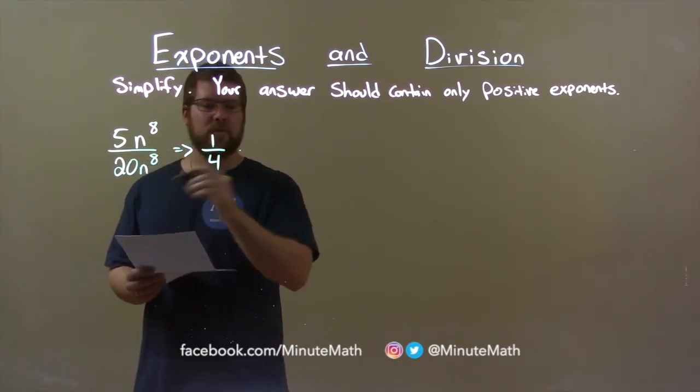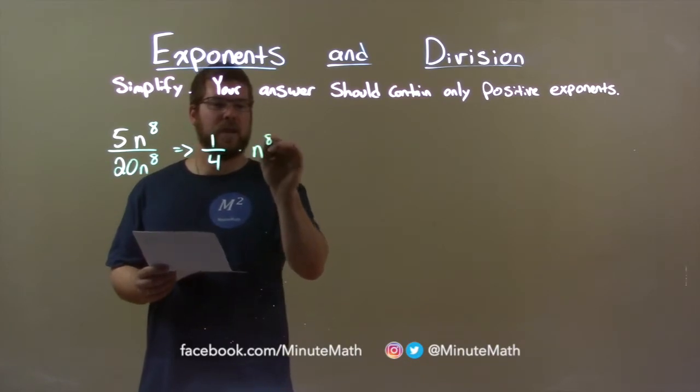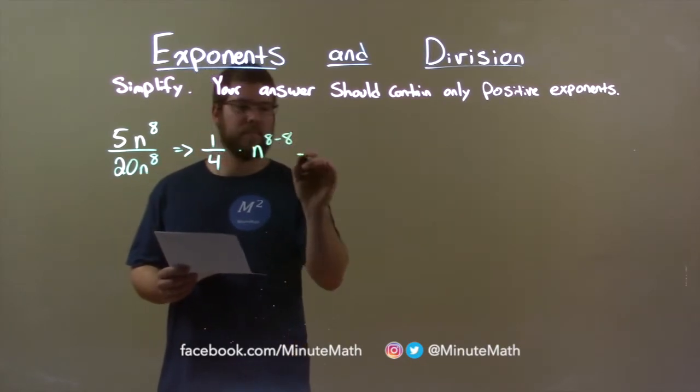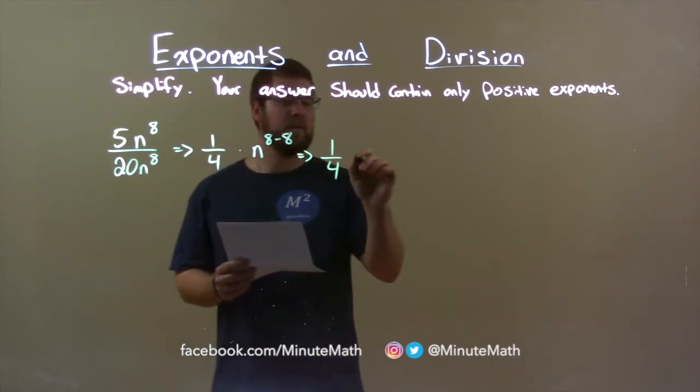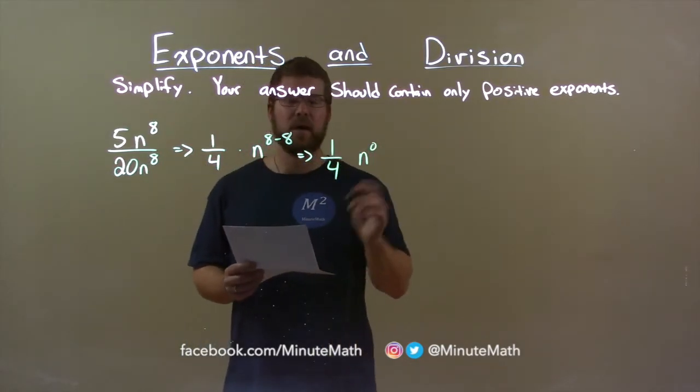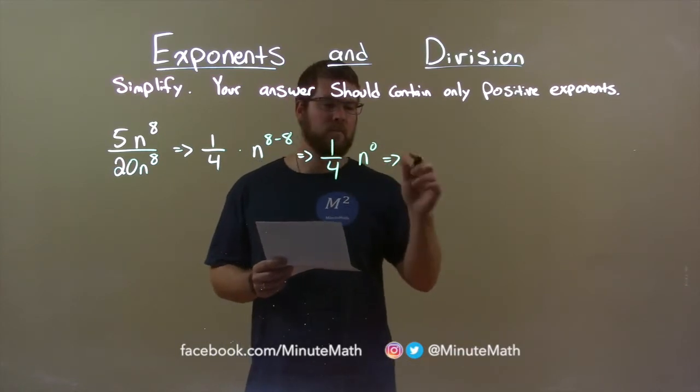We subtract the exponents, we have the same base. We have n to the 8 minus 8 power. 1 fourth still stands, and n to the 8 minus 8 is n to the 0 power. And we know any number to the 0 power is 1.